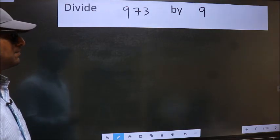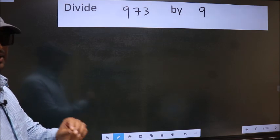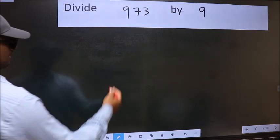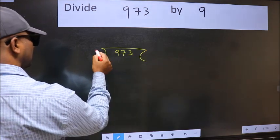Divide 973 by 9. To do this division, we should frame it in this way: 973 here and 9 here.